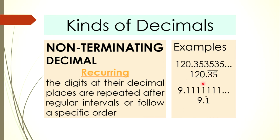We also have 9.111 and so on, with ellipses. This can simply be written as 9.1 with a bar on top of the repeated decimal — what we call the vinculum.